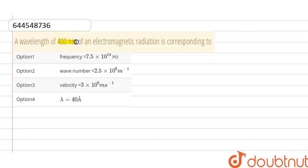So here first is frequency is given. As we know that frequency is equals to c divided by lambda, where c is the speed of light which is 3 into 10 raised to the power 8 meter per second.